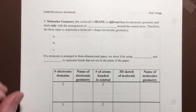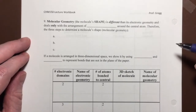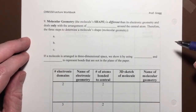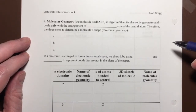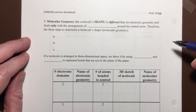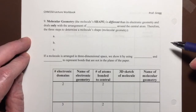Okay class, we have covered how the electronic domain geometry — that is the arrangement of electron domains around a central atom — depends on how many electron domains there are. So far we were talking about central atoms that have between two and six electron domains, and we have gone through all of the electronic geometries associated with those possible electronic arrangements.